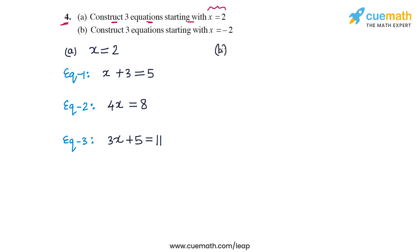You can multiply, divide, add, or subtract anything you want to get any number of equations. Now let's do the same thing with x equal to minus 2, and this time let's try to make slightly more complicated equations.